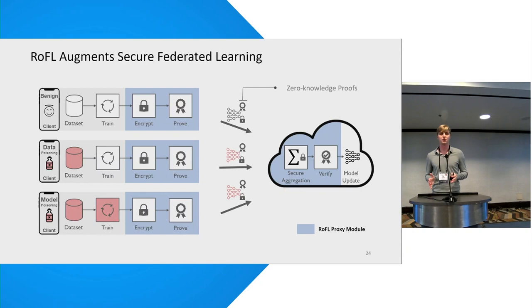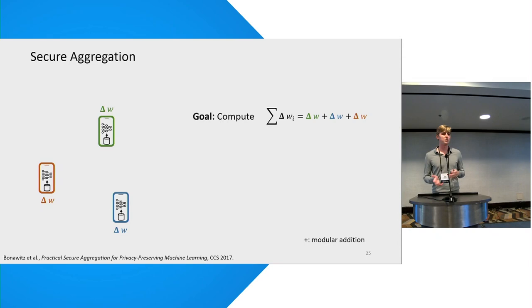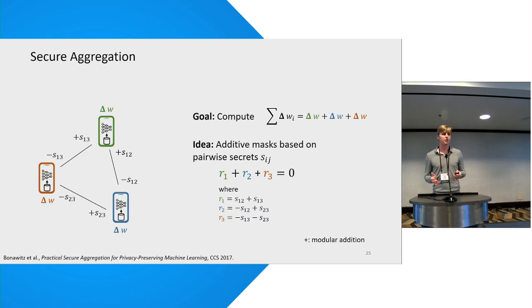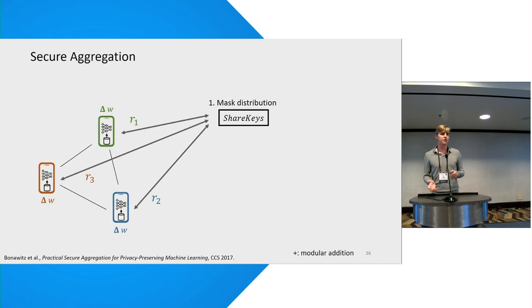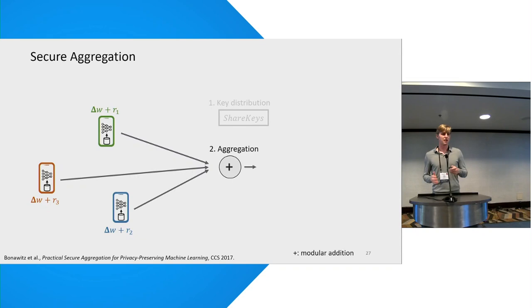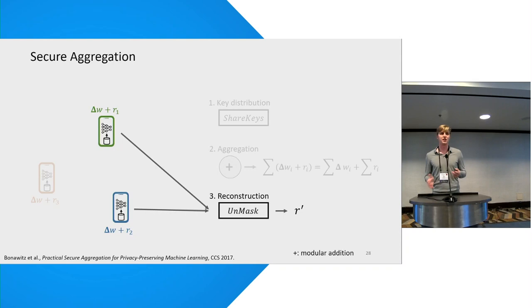This protocol is the one proposed by Bonawitz et al., and relies on an additive homomorphic masking scheme where each client blinds its input vector W with a masking vector R derived from pairwise shared secrets. In the basic protocol these masks are derived in such a way that allows them to cancel out during aggregation, allowing the server to recover the sum. The protocol at a high level consists of three stages: first, clients agree on pairwise shared keys used to generate the masks; then each client uses the masking value to encode their input and send it to the server; finally the server constructs a decoding key R' which it uses to decrypt the aggregate update.